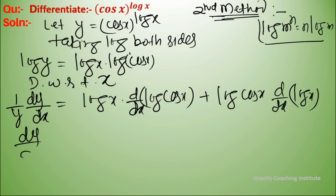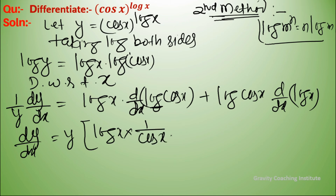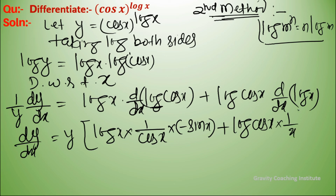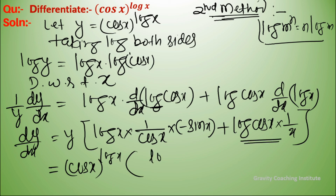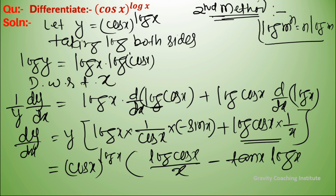So dy upon dx equals y multiplied by: log x times 1 upon cos x times minus sin x, plus log cos x times 1 upon x. Substituting y equals cos x to the power log x, the final answer is cos x to the power log x times log cos x upon x minus tan x times log x.